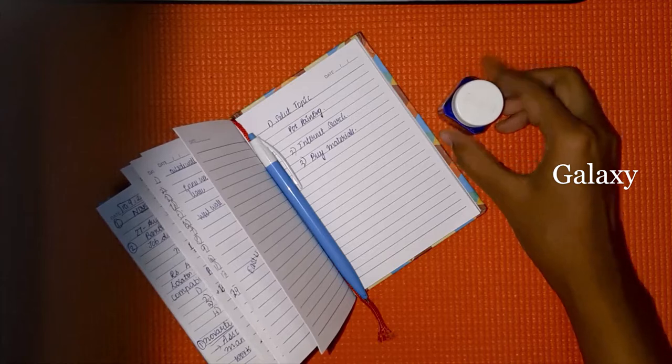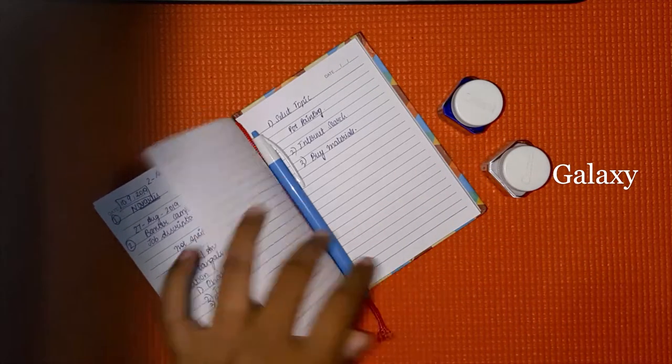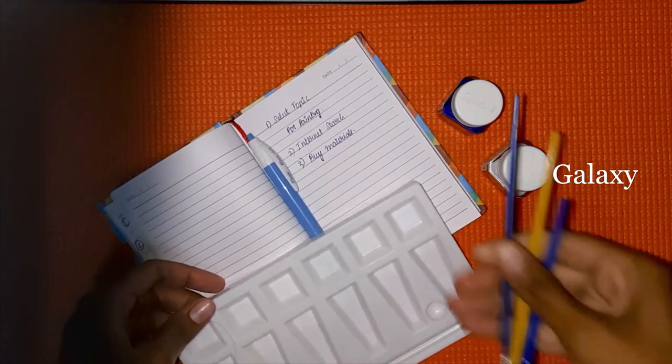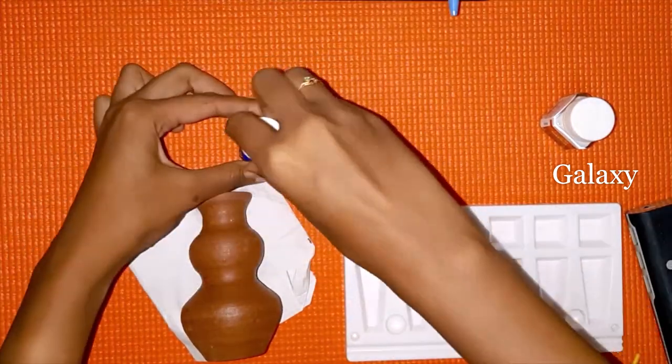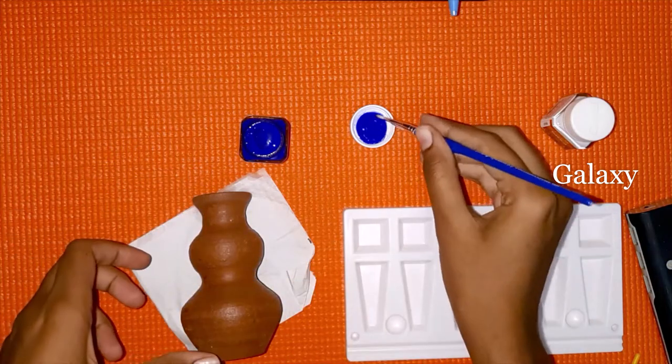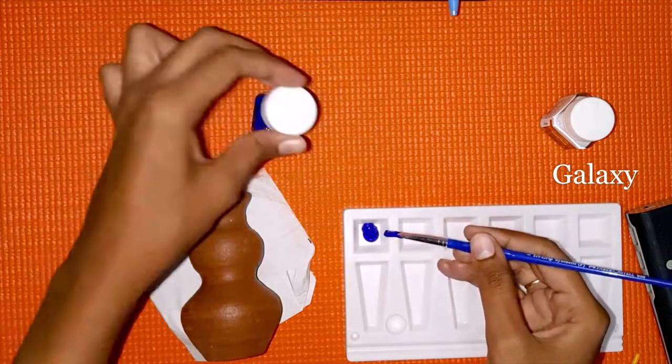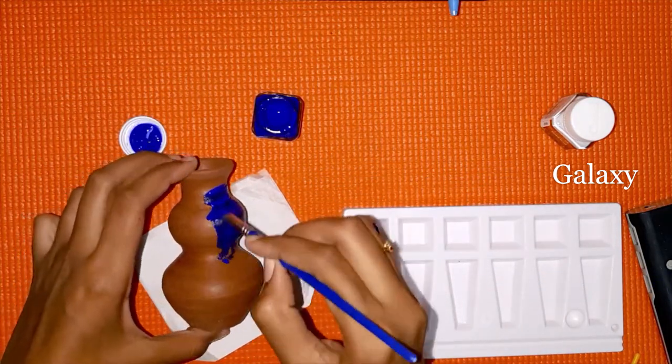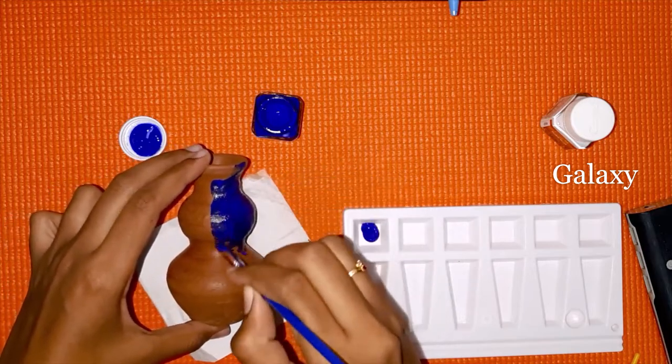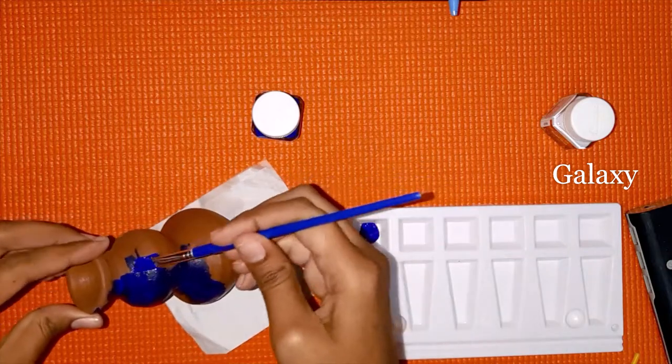This is the fourth step. Before starting any work, we have to keep a base cloth or tissue for preventing mess. As we are going to paint the galaxy, we don't want any base.